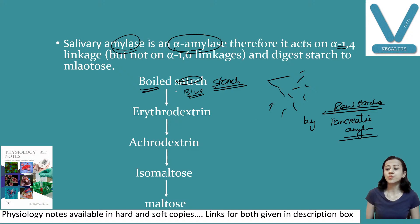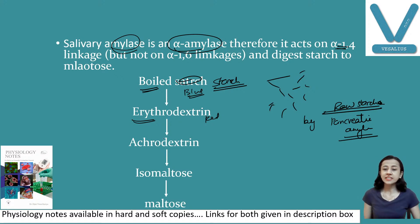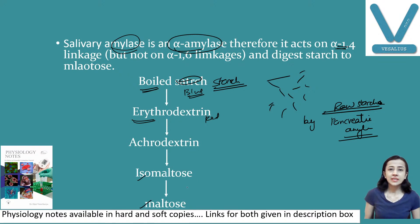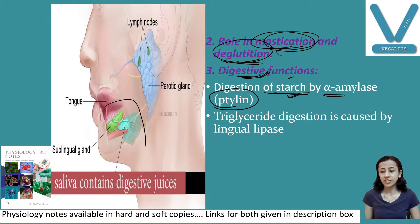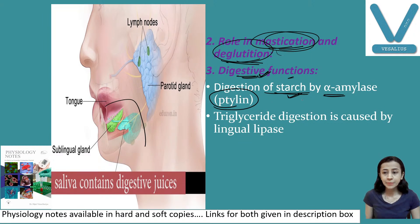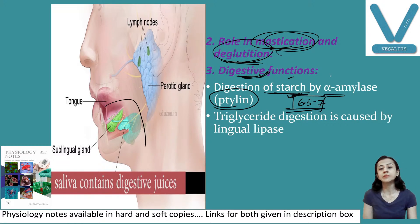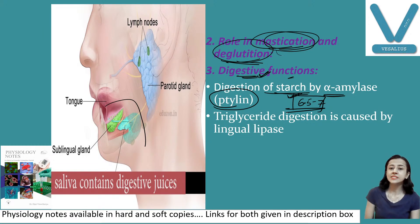The boiled starch, which gives blue color with iodine, is first converted into erythrodextrin, which gives red color, then acrodextrin, which is converted into isomaltose and maltose. This is how salivary amylase acts on boiled starch and converts it into maltose. Another important point: the action of salivary amylase is optimum at pH 6.5 to 7, and between this pH only, alpha amylase is active.